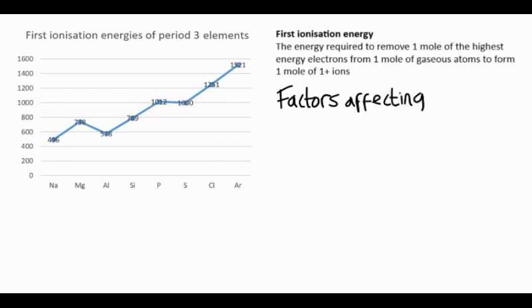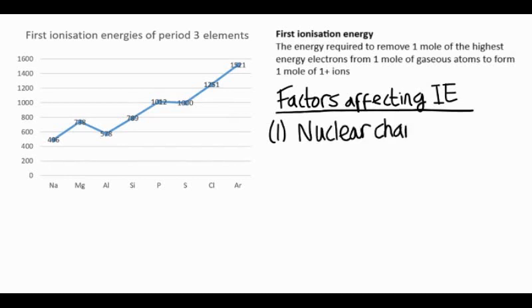So what factors affect the first ionization energy? Well, the first one is nuclear charge. The more protons in the nucleus, the greater the total positive charge of the nucleus, and the harder it is to remove electrons. Nuclear charge is sometimes given the symbol Z. It's the same as the atomic number, the number of protons in the nucleus.